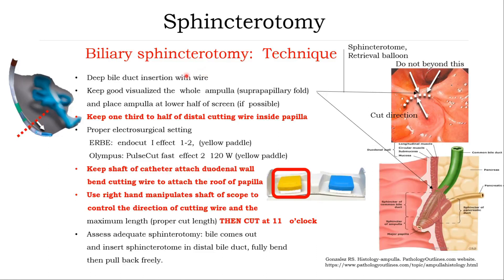Technique in detail of biliary sphincterotomy: Insert the sphincterotome wire inside the bile duct. Keep good visualization of the ampulla, especially to see the supra-papillary fold. If you cannot see it, you can put the sphincterotome fully bowed and pull back, or put a balloon and inflate the balloon, then pull back — you can see the supra-papillary fold more clearly. Place one-third to half of the distal cutting wire inside the papillary fold. Check proper electrosurgical unit settings and keep the sphincterotome indicator attached to the roof wall. Bend the cutting wire to attach the bow to the papilla. Use the right hand to maneuver the duodenoscope to control direction and cut the wire by pressing the yellow pedal. Keep cutting at 11 o'clock and not beyond the supra-papillary fold.